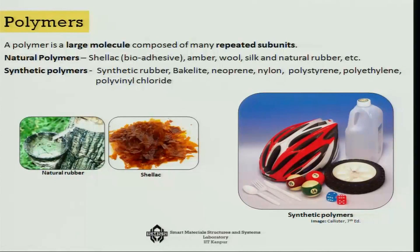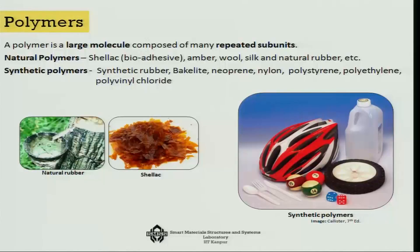Next come polymers. Natural rubber was once the only polymer, but then there are many others — wool, silk — and then synthetic polymers: synthetic rubbers, bakelite, neoprene, nylon, etc. The whole world today revolves around polymers, and I will describe them in more detail later.